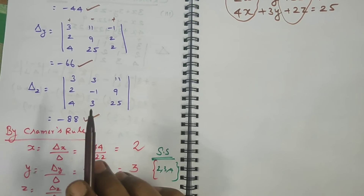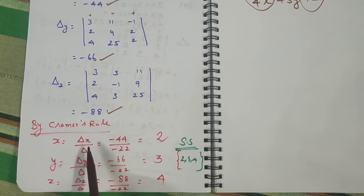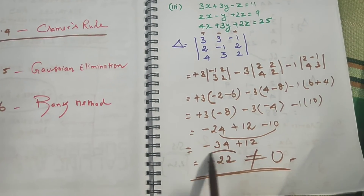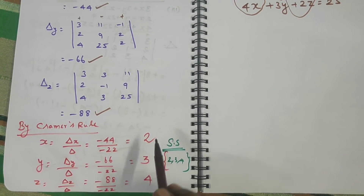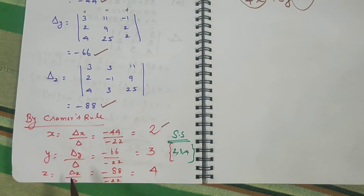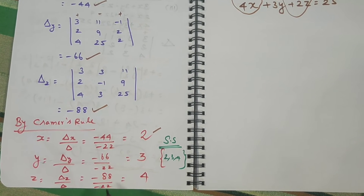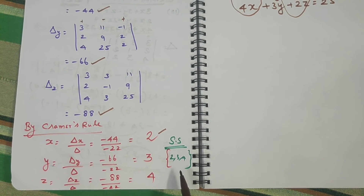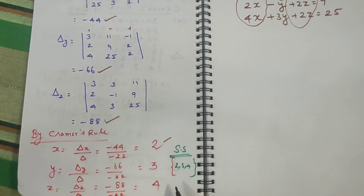After finding these four values, we apply Cramer's rule. The formula is: x equals delta x divided by delta, y equals delta y divided by delta, z equals delta z divided by delta. Delta x is minus 44, delta is minus 22, so x equals minus 44 divided by minus 22 equals 2. Delta y is minus 66, so y equals 3. Delta z is minus 88, so z equals 4. The solution set is (2, 3, 4) and the answer is correct.